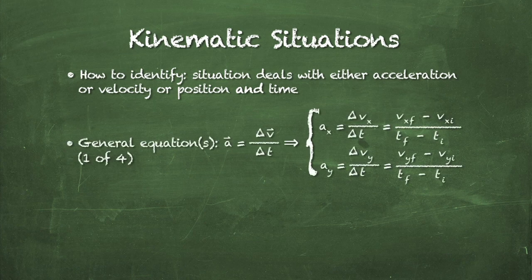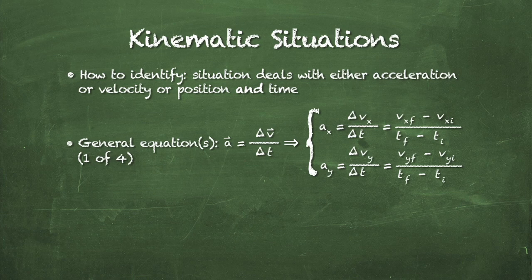The general equation — the first of four starting equations for kinematic situations — is our relationship between acceleration and velocity: acceleration is equal to the change in velocity over change in time. The acceleration vector equals the change in the velocity vector over the change in time. Since that's a vector equation, that's actually two equations: an x-component equation and a y-component equation.